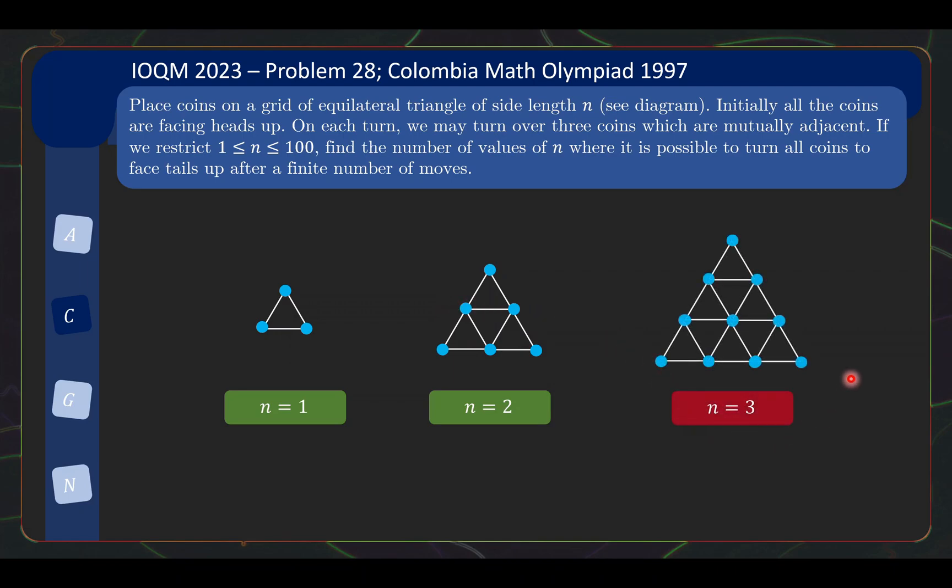As for n equals 3, after a bit of trying, you might be convinced that maybe there is no way to turn all the coins to face tails up. Now, a rigorous proof of this will be quite difficult to come up with. But that is the point of what we are going to show in the rest of the video. So I will not be showing the proof as of now. But you might be reasonably convinced after a few minutes of trying that n equals 3 does not seem to work.